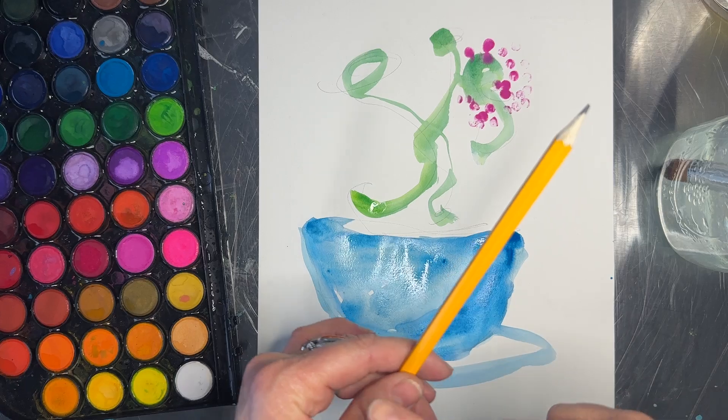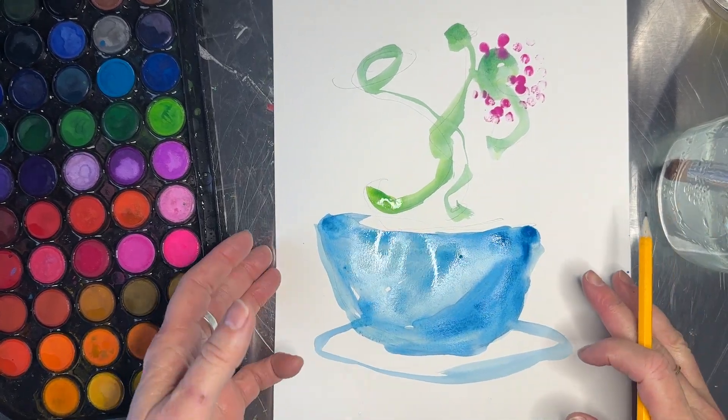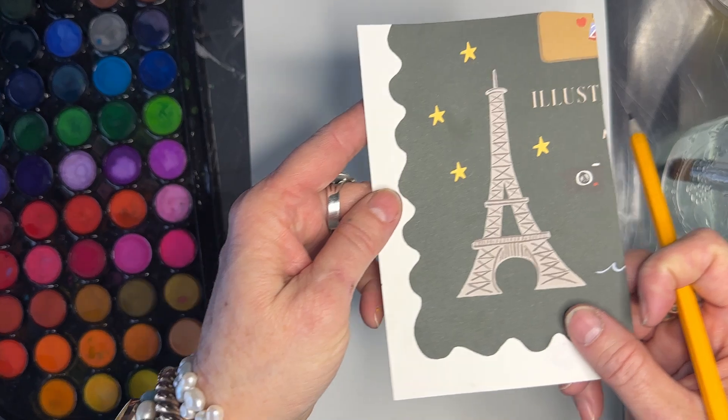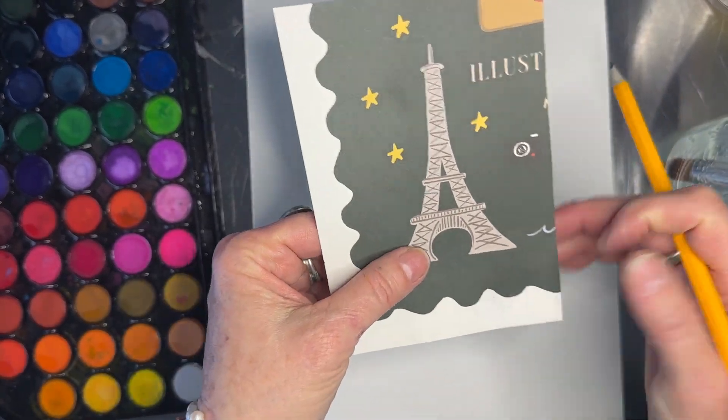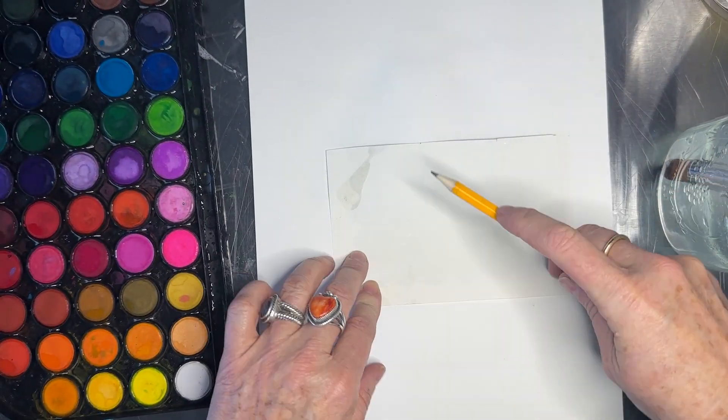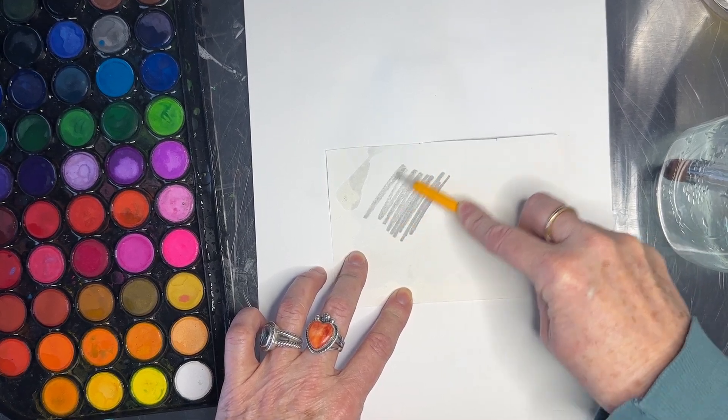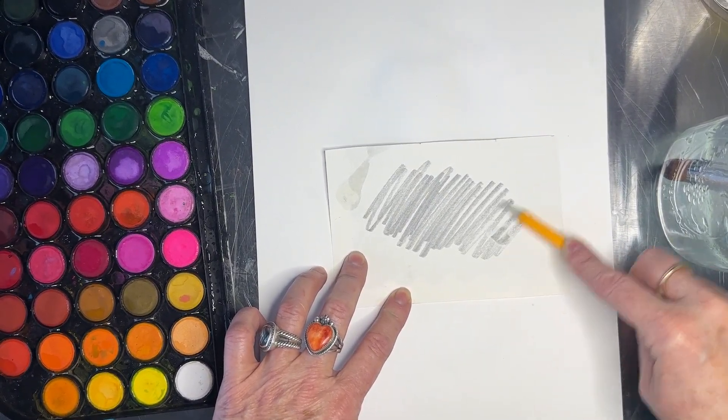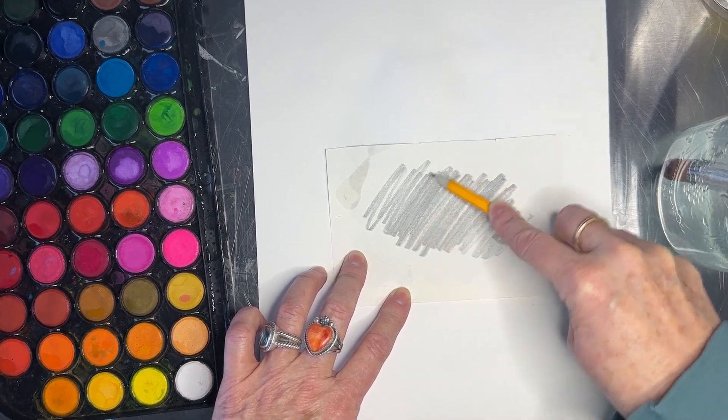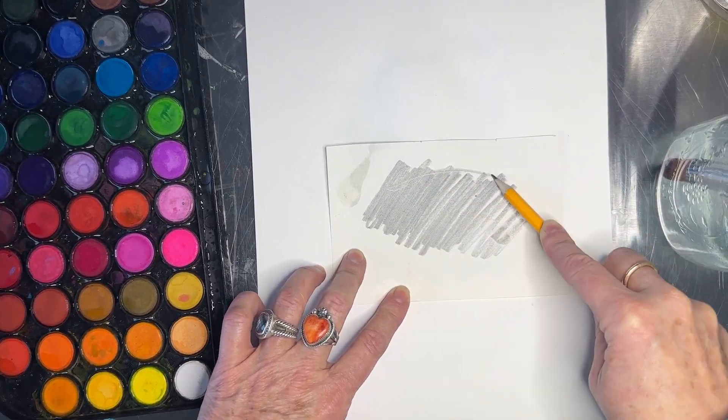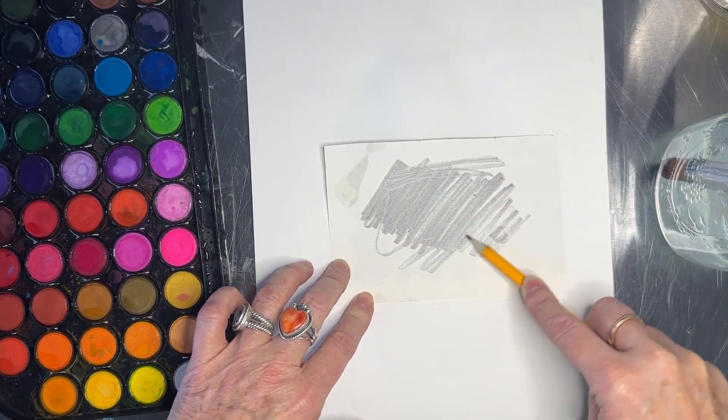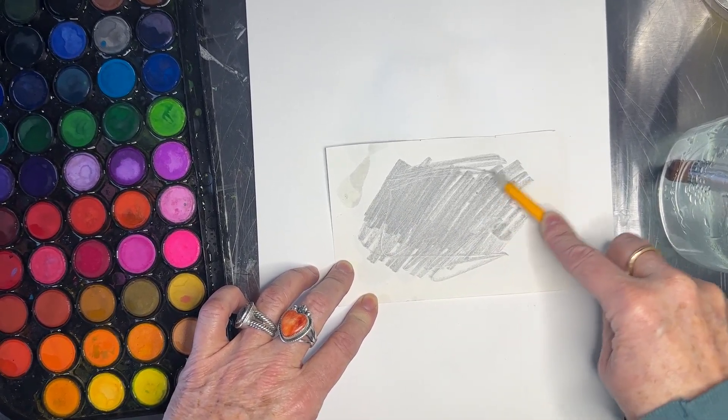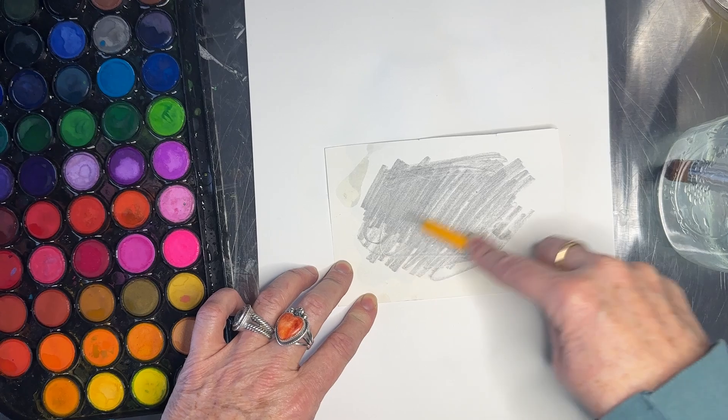It's also a transfer tool. I have this little picture here of the Eiffel Tower and I'm going to turn it over. I'm going to use the graphite, which is another word for lead, which is in the pencil. I'm just going to rub that on the back and press down pretty good and make sure in my mind that I'm pretty much covering the Eiffel Tower part.